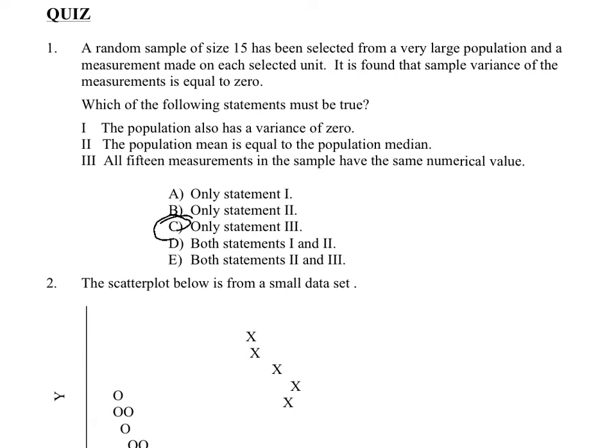The only way you can get a zero for the sample variance or the sample standard deviation is if all 15 measurements in the sample have the same numerical value.